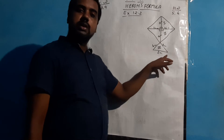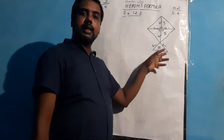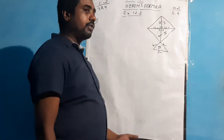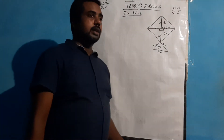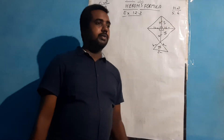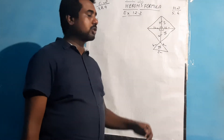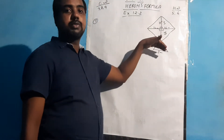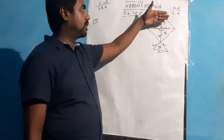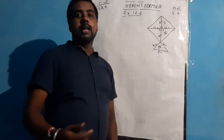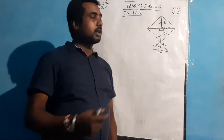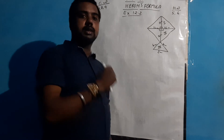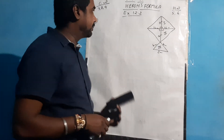The base of the isosceles triangle is given as 8 and the equal sides are given as 6. We need to find how much paper will be needed for each of the 3 different shades — that is, we need to find the area of the first part, second part, and third part separately.